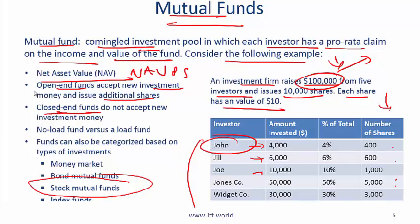Generally, open-end funds trade at or very close to net asset value due to their structure. Closed-end funds do not necessarily trade close to NAV — they can trade above NAV if demand for shares is very high, but very often closed-end funds trade below NAV.